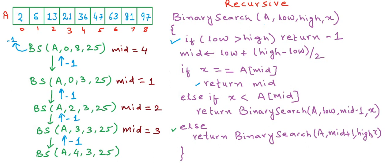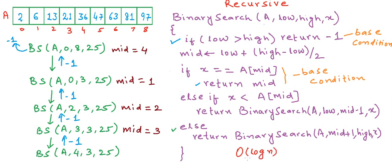While writing recursion, we must be very careful about the base conditions. If we do not get our base conditions right, our recursion may go on endlessly, causing the program's memory to overflow and the program to crash. The time complexity of this algorithm is O(log n). The time taken is proportional to log n, which comes from the fact that if we keep dividing the size of the array by two at each step, it will take log n steps to reach an array size of one.